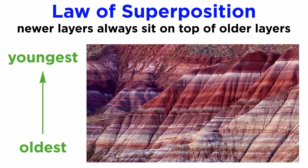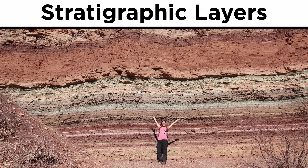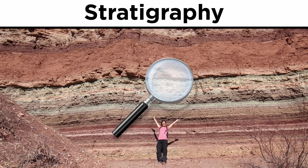The law of superposition states that sediment is deposited in horizontal layers, and newer layers are always deposited on top. This means that the deeper the layer, the older it will be. These layers are called stratigraphic layers, and the investigation and interpretation of them is called stratigraphy.